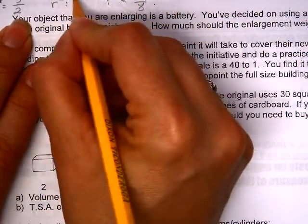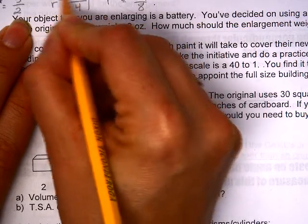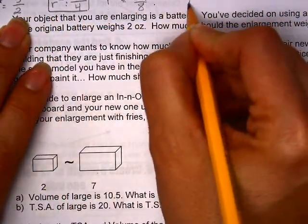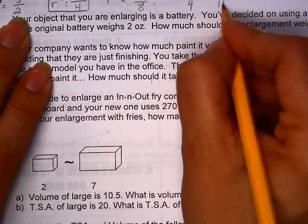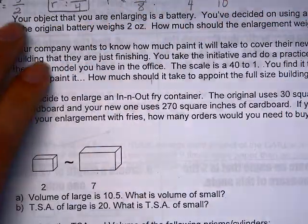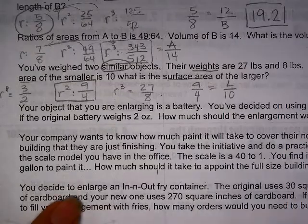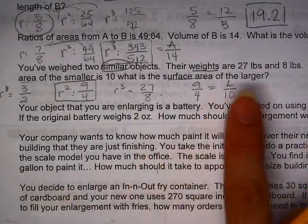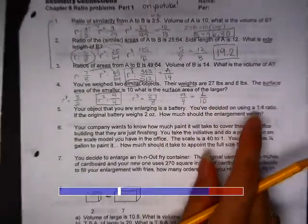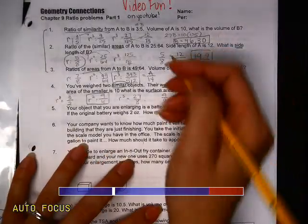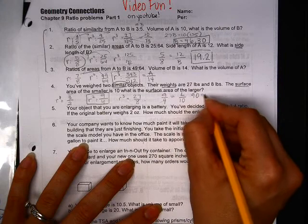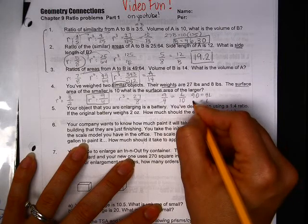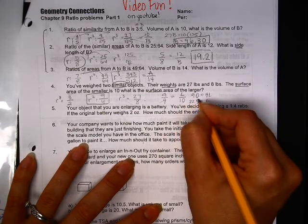I'm interested in surface area, so I need to know what my R squared is. I now have it, and I know that the smaller is 10, and I'm looking for the larger. So again, the smaller is 10. I'm looking for the larger. So I do my little cross-multiply. I have 90 is equal to 4L, and L is equal to 22.5.